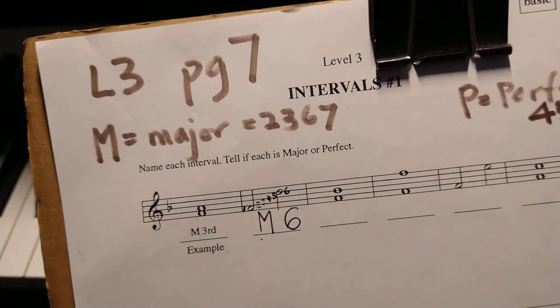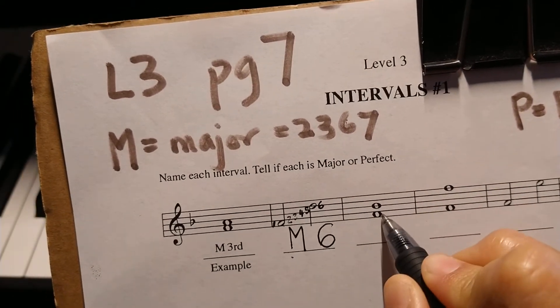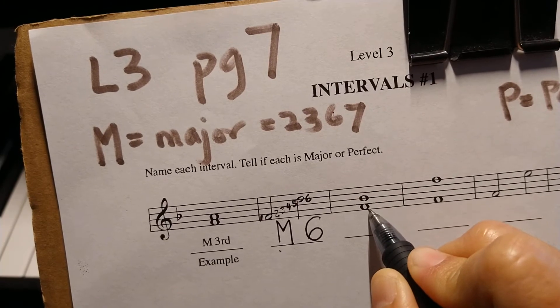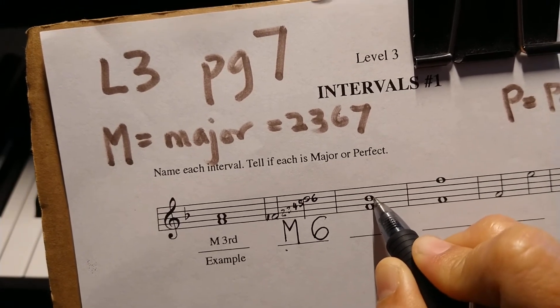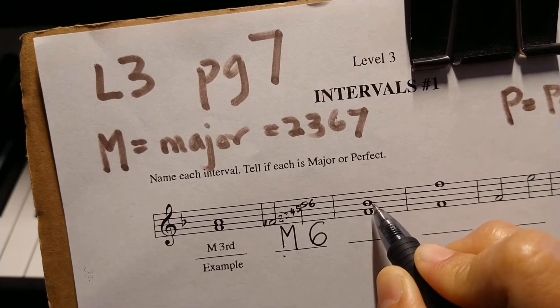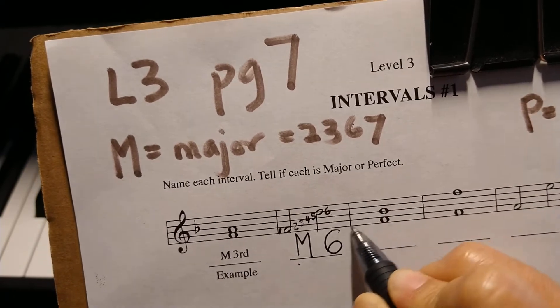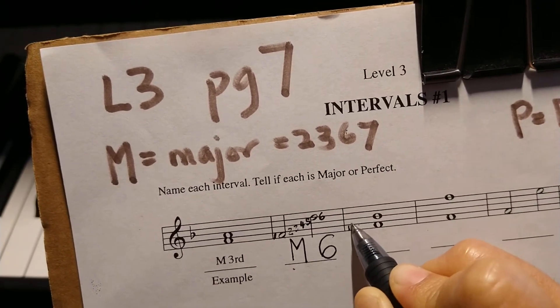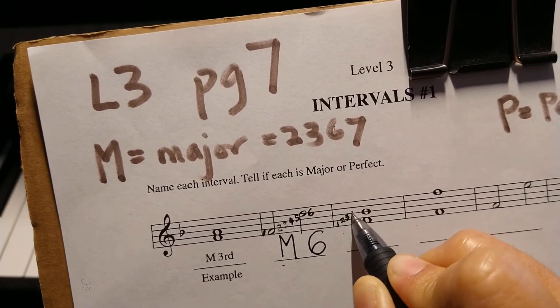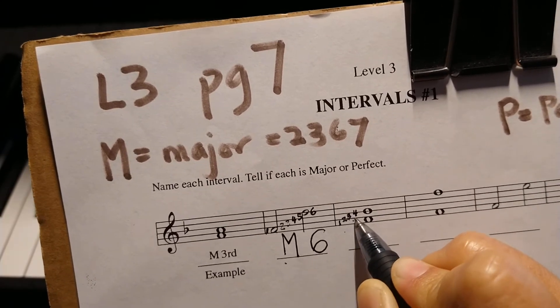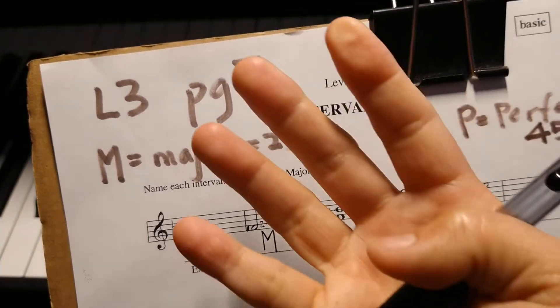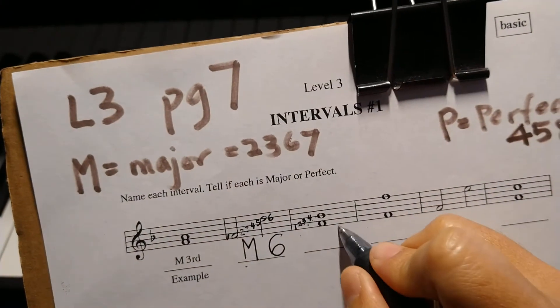Let's count the next one. So from here, always count from the lower note to the higher note. Intervals must have 2 notes. The lower note is a space note. So you have 1, 2, 3, 4. Space, line, space, line. So 4, write a 4.